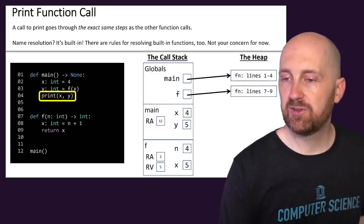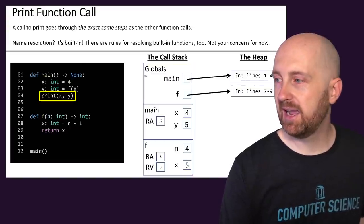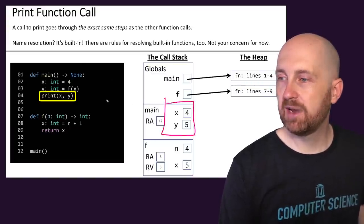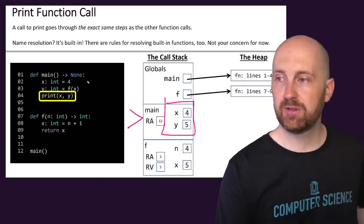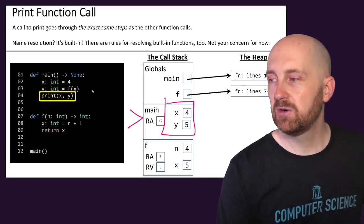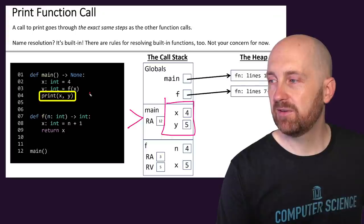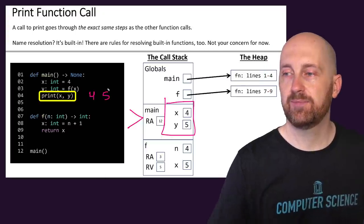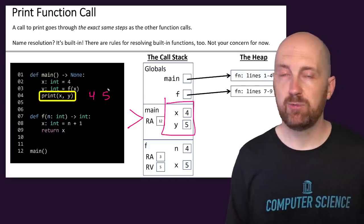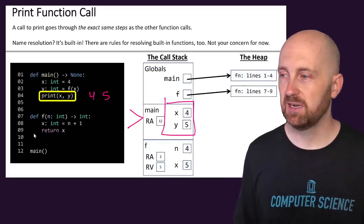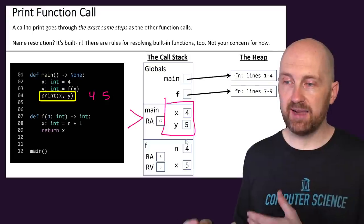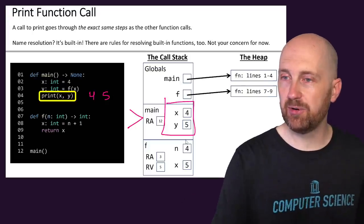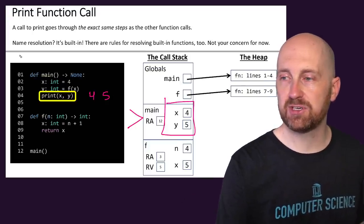What gets printed out would be x, and when we look up x we're looking in the current frame — that's still main's frame — so we would print 4, and then 5 would follow it. Four and five would be the printed output of this example. But we're not done yet — our main function still hasn't returned.